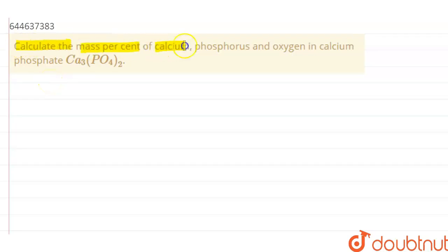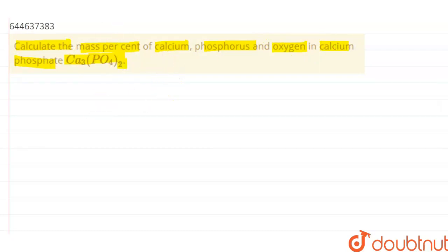The question says: calculate the mass percent of calcium, phosphorus, and oxygen in calcium phosphate, which is Ca₃(PO₄)₂. Let's solve this question.